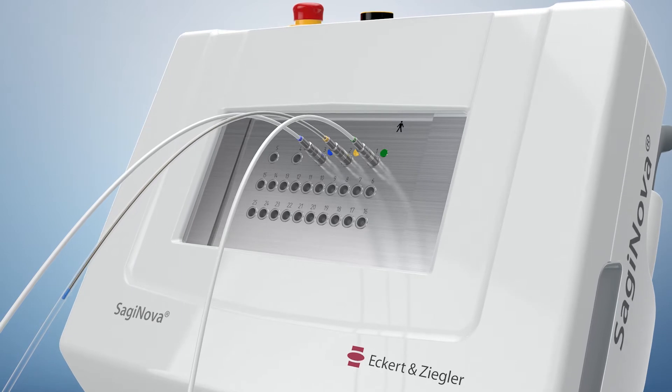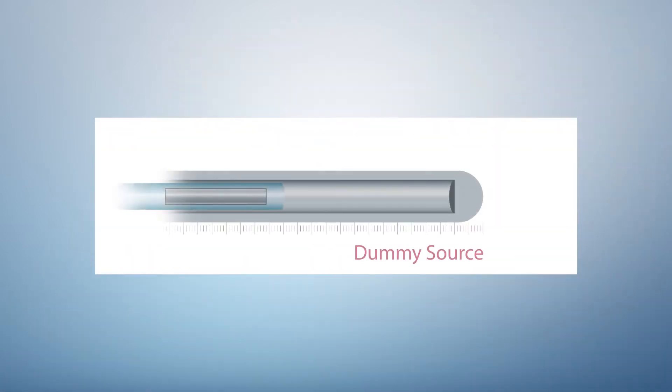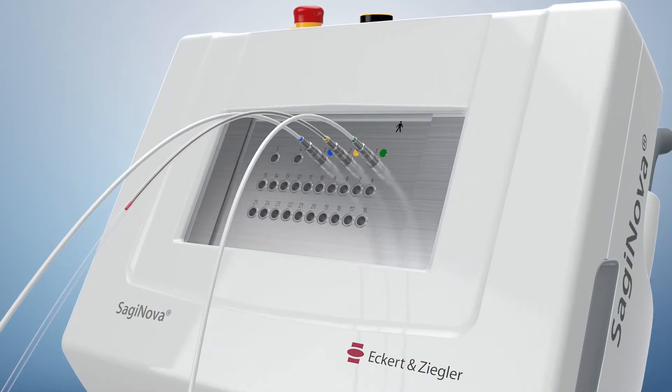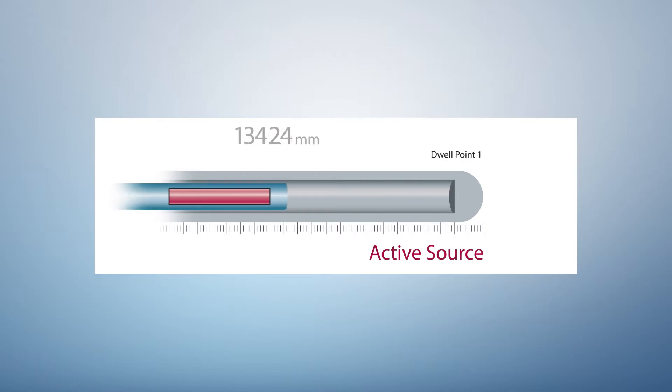Prior to each application, the dummy source measures the length of the complete channel to allow for the verification of the correct channel length. The precisely measured length of each individual channel is automatically used for an accurate positioning of the active source relative to the tip.